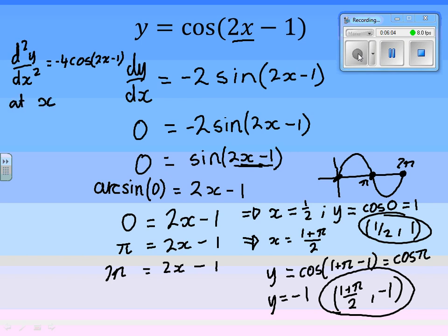So at x is equal to 1/2, we have d²y/dx² is equal to minus 4 lots of cos, 2 times 1/2 is 1, 1 minus 1 is 0. Well, that's equal to minus 4, which is less than 0. So therefore, it's a maximum.